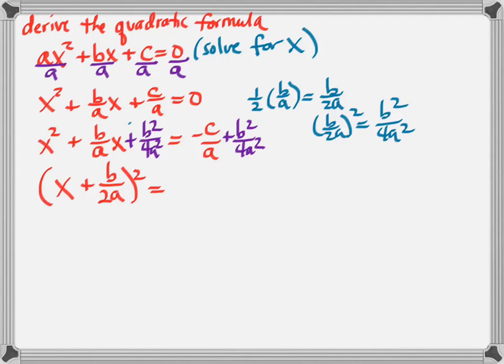And then on the right-hand side, I'm going to need a common denominator. I have to put these together. So my common denominator is going to be 4a², and I prefer to write it so that my leading term is positive: b²-4ac.